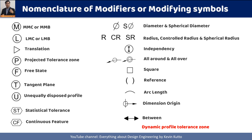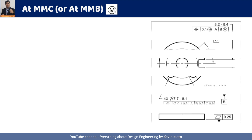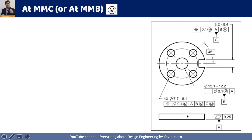Let's begin with our first modifying symbol: MMC or MMB. Why are there two different names? It depends upon where the circled M symbol is placed. In this example, the M symbol is associated with the geometric tolerance as well as with the datum reference. Based upon where it is placed, we call it MMC or MMB.